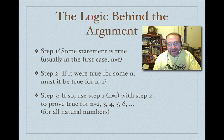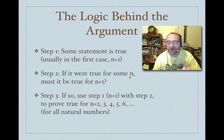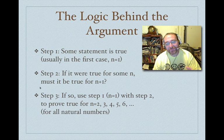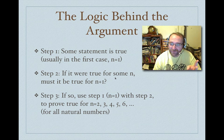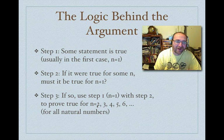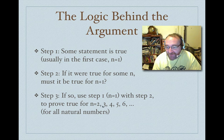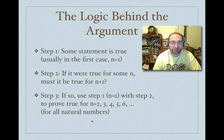In step three, you link the first two steps together. If it's true for the first case, that implies it's true for the second (which is one plus one). Then it must be true for the third, the fourth, the fifth, and so on. There's no end to this process — therefore it must be true for all natural numbers. A proof is an argument about why something is true.